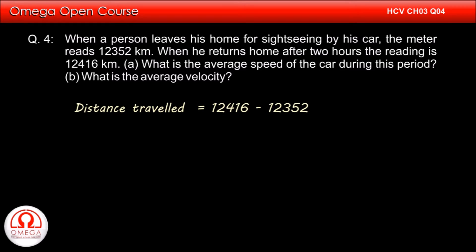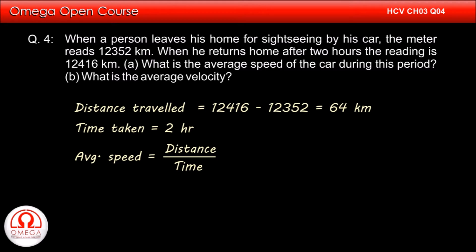Distance travelled by the car is the difference in its final meter reading and initial meter reading, i.e. 12,416 minus 12,352 or 64 kilometers. Time taken is 2 hours. Average speed is given by distance travelled divided by total time taken, i.e. 64 divided by 2 or 32 kilometers per hour. This is the answer to part A of the question.